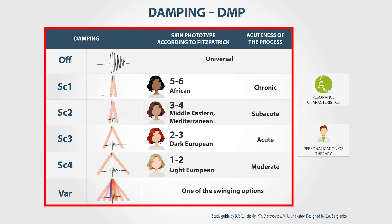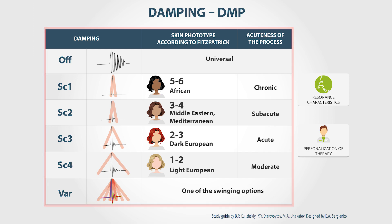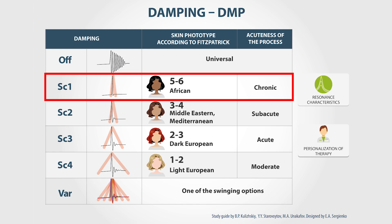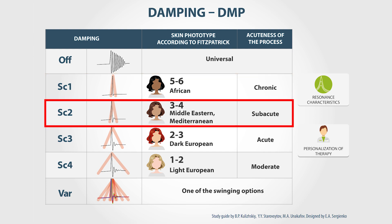The more dark or thick the skin is, the more sharp the signal should be. The more pale or thin the skin is, the softer should be the signal. Basically, we need Damping 1 for thick or dark skin and Damping 2 for thin or pale skin.